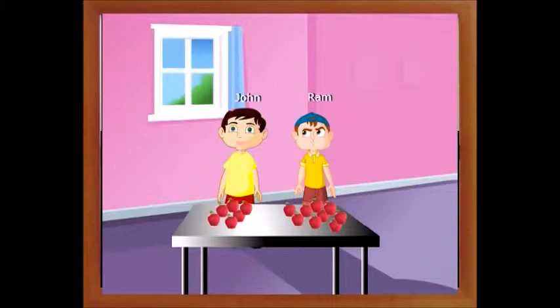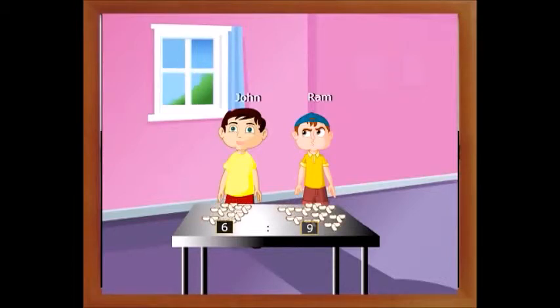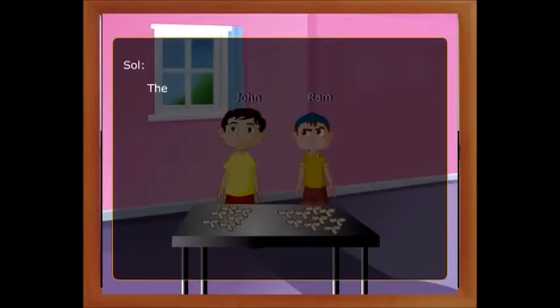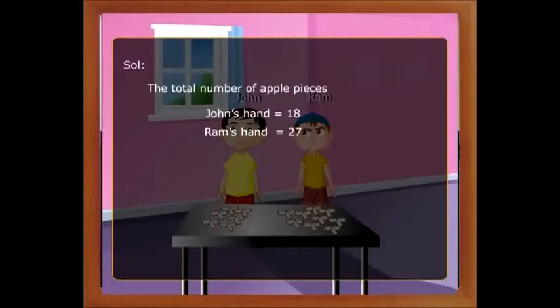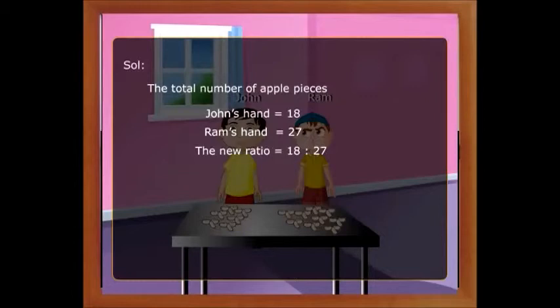Let's see an example. The ratio of the number of apples in John and Ram's hand is 6 is to 9. Ram and John cut each of their apples into 3 equal parts. The total number of apple pieces in John's hand is 18 and in Ram's hand is 27, so the new ratio is 18 is to 27.